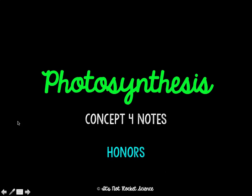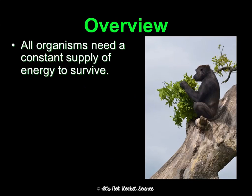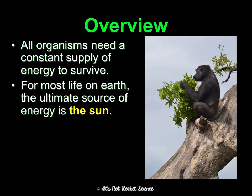Okay, honors students, we're talking through photosynthesis, which is concept 4 notes. We have been talking about how all organisms need a constant supply of energy to survive. For most life on Earth, the ultimate source of energy is the sun. A very small amount of producers can do chemosynthesis and make food from chemicals, but pretty much all producers are using photosynthesis.